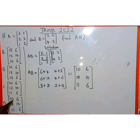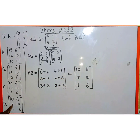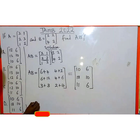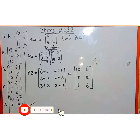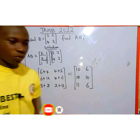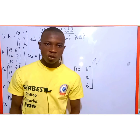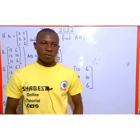The result is 10, 6, 18, 10, 11, 6 — so the correct answer is option D. This is how to multiply a 3 by 2 matrix with a 2 by 2 matrix. Thanks for watching, please follow me for more, and please do share this video.